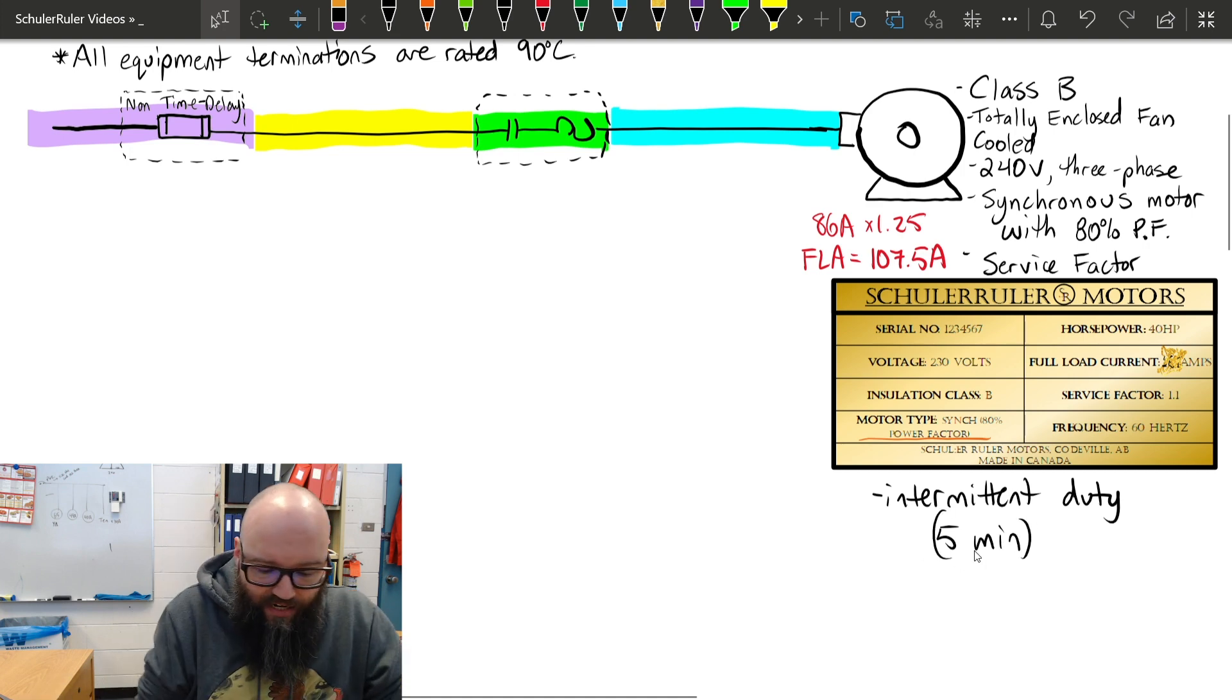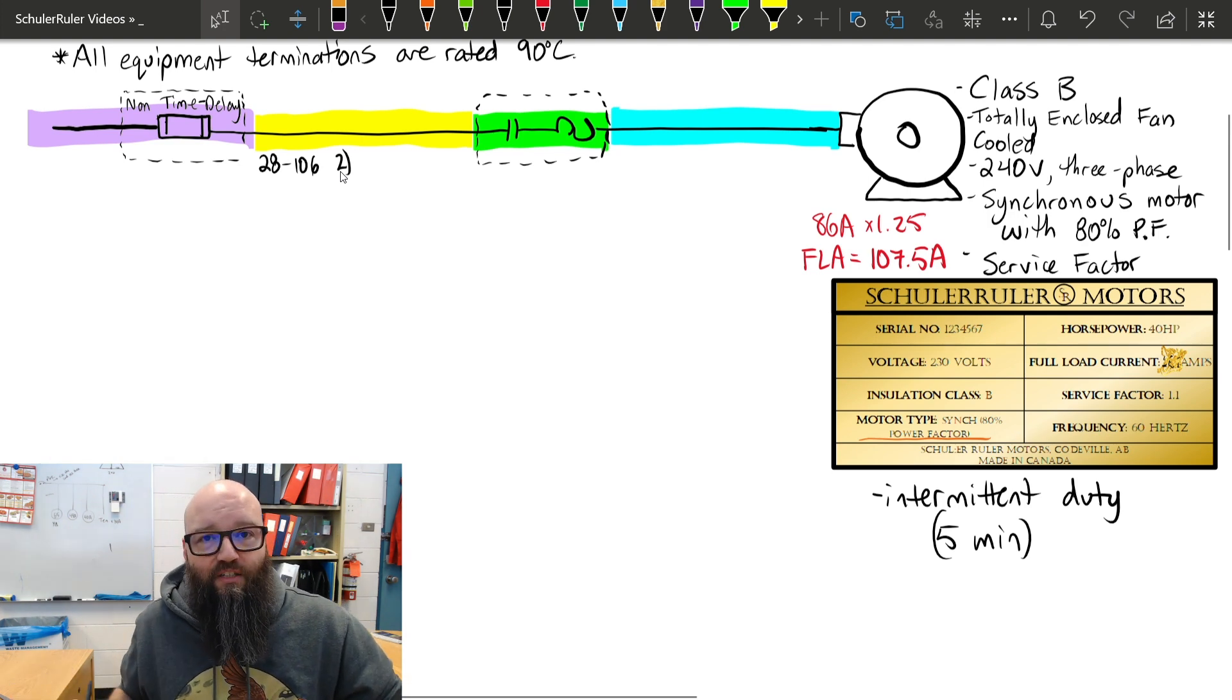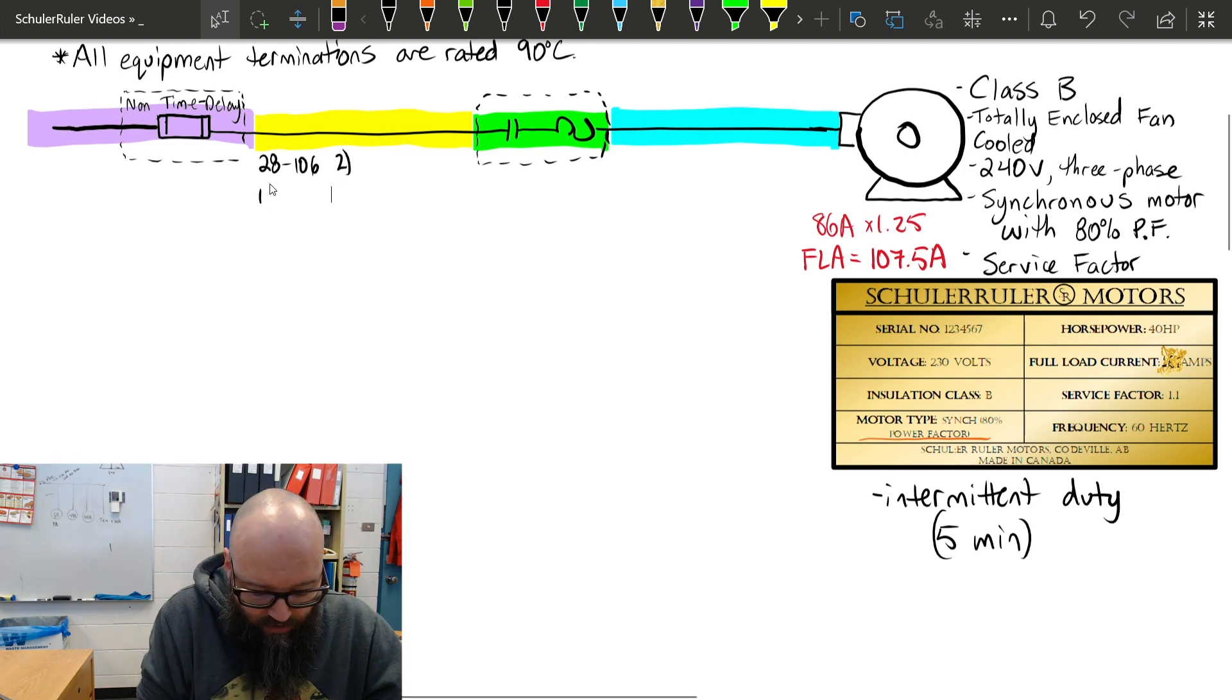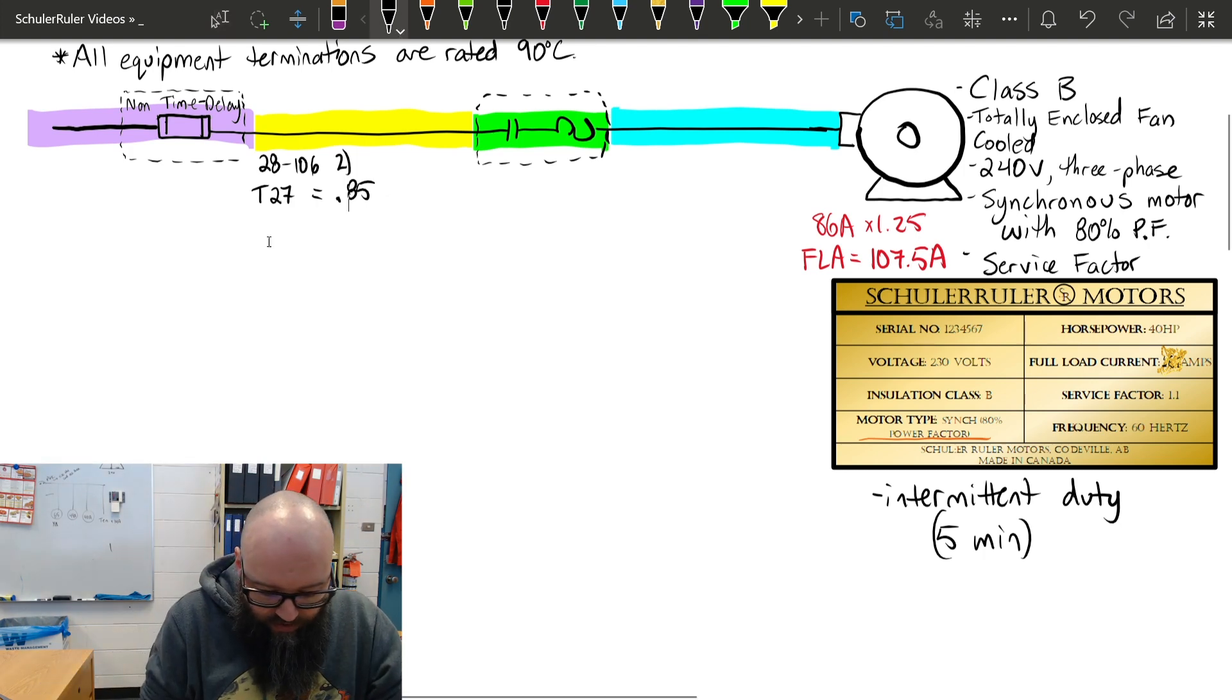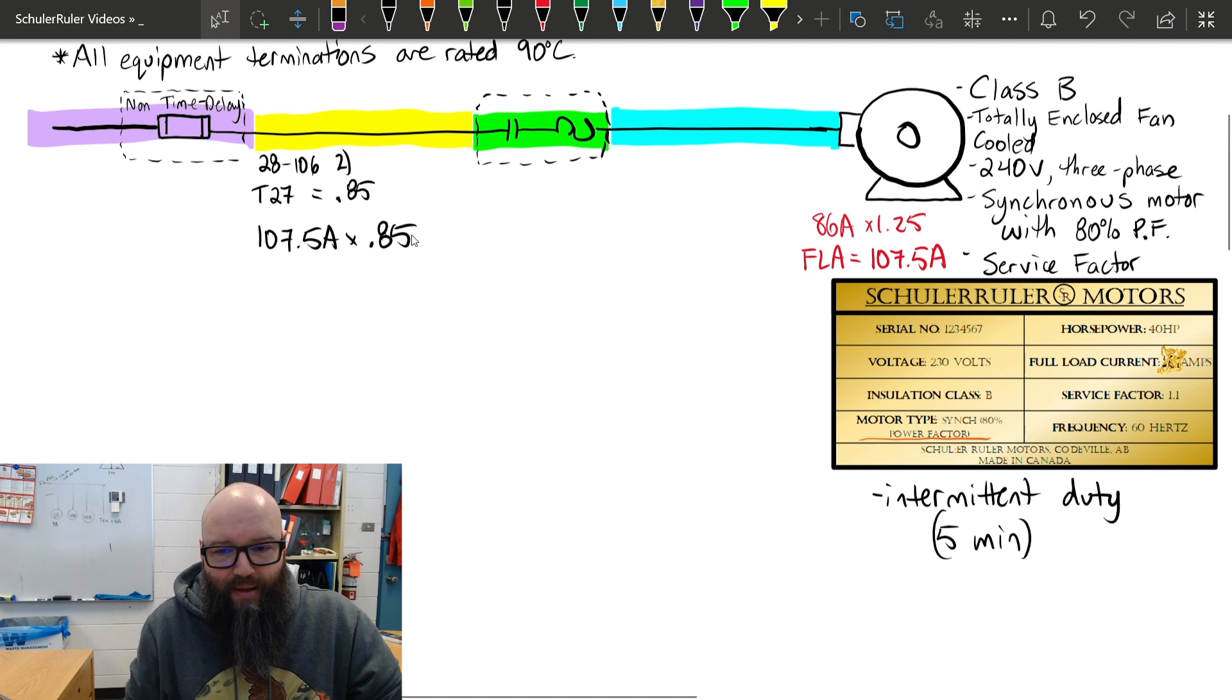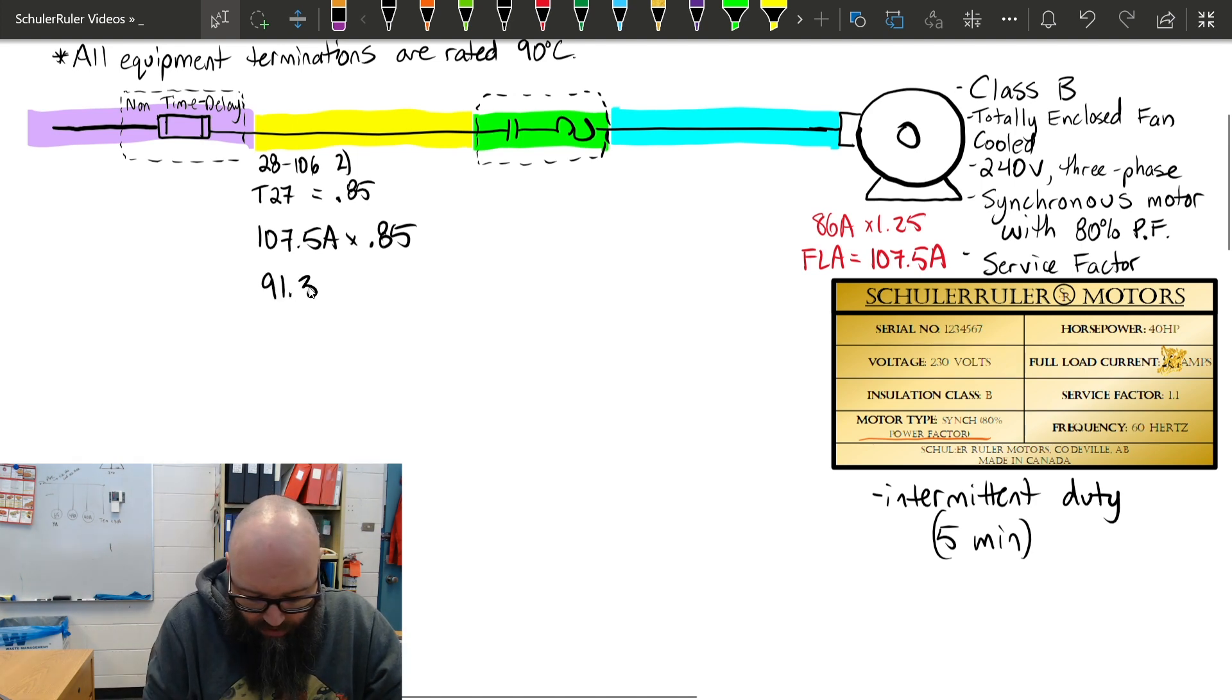Because this is now classified as a non-continuous duty motor, we're going to use 28106 subrule 2, which tells me to obtain that multiplying factor to get that minimum ampacity for our branch circuit conductors. We're going to go to table 27, which tells me we have a multiplying factor of 85%. I don't have to use that full FLA. I'm permitted to use 85% of that FLA because this motor is not running for very long periods of time. Starting off with that 107.5 amps as our FLA times 0.85, we get a minimum ampacity for our branch circuit conductors of 91.35 amps.